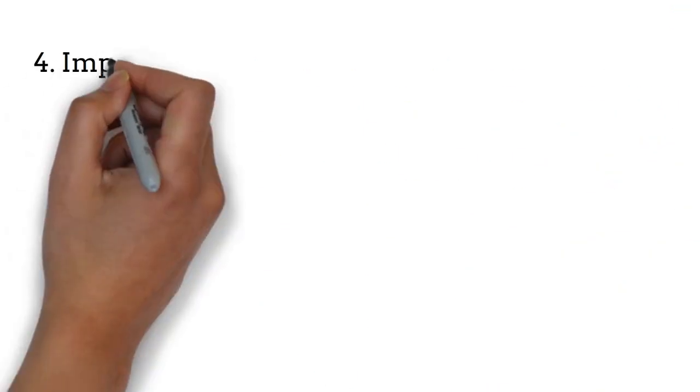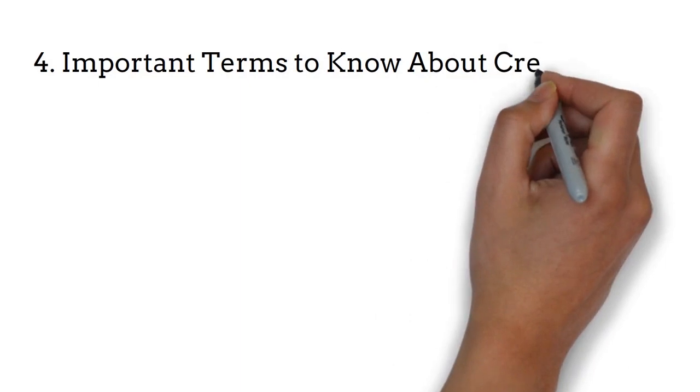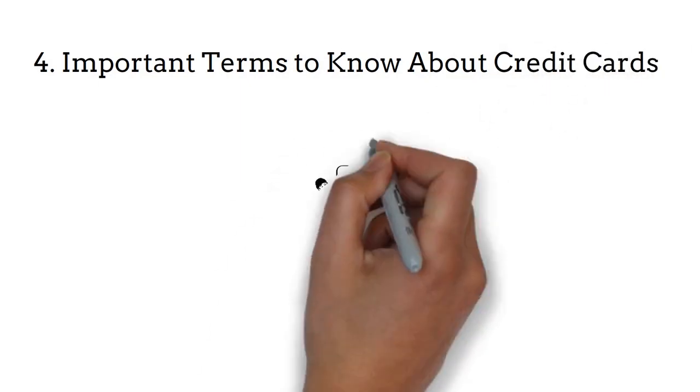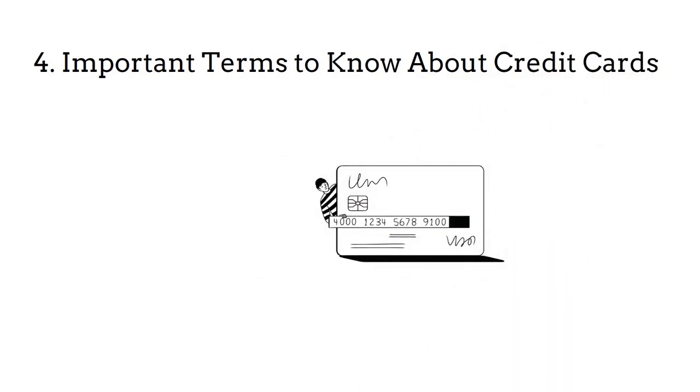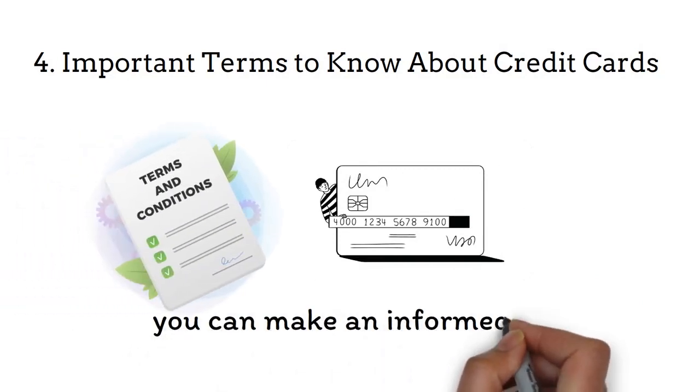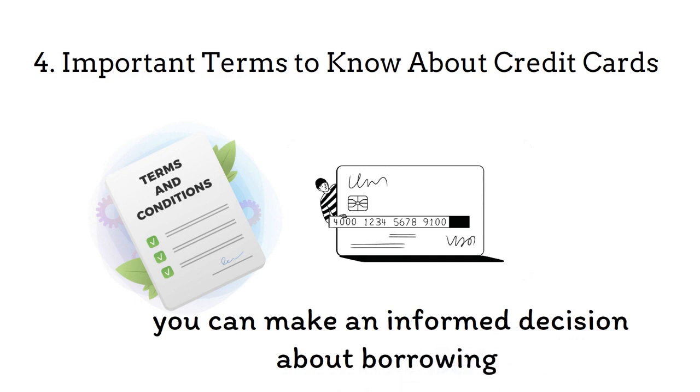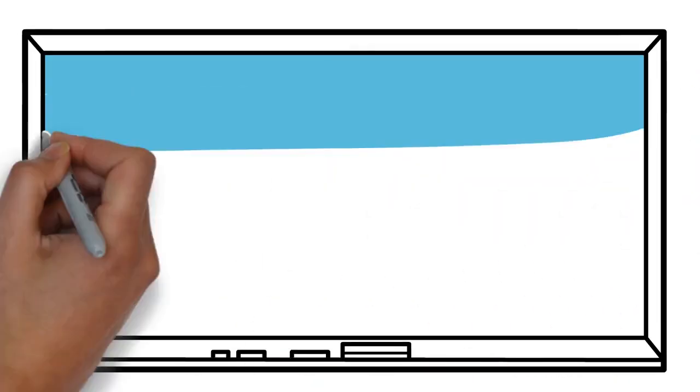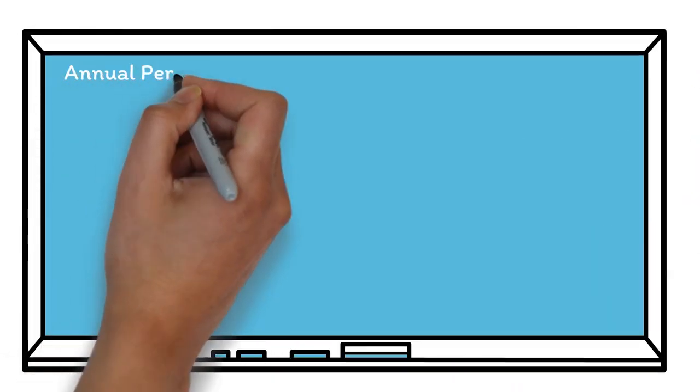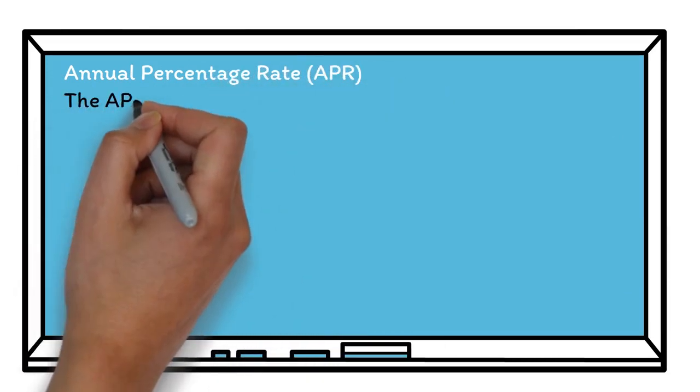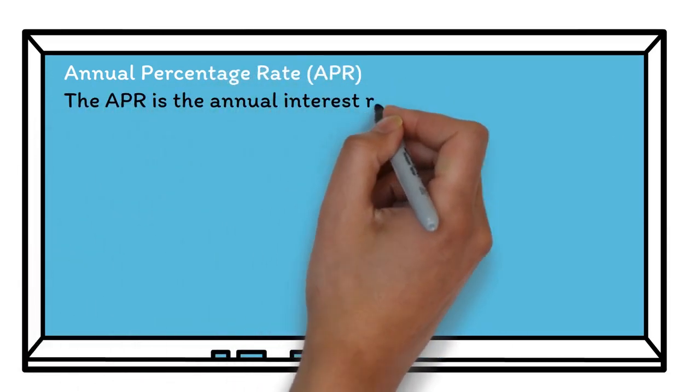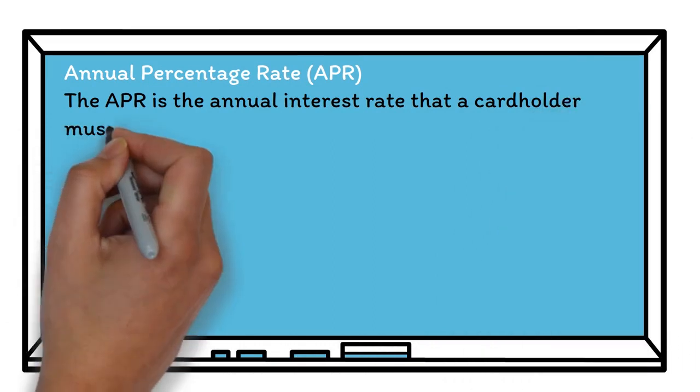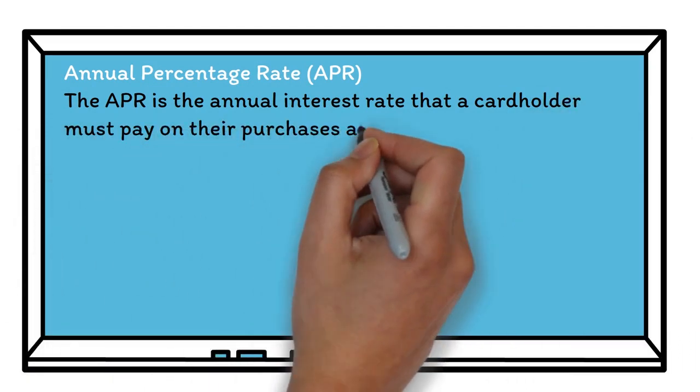Number four, important terms to know about credit cards. Before using a credit card, it's important to understand certain terms and conditions so that you can make an informed decision about borrowing. Here is a list of some important terms to know. Annual Percentage Rate, APR. The APR is the annual interest rate that the card holder must pay on their purchases and balance transfers.